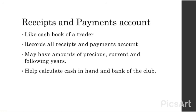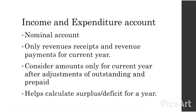The receipts and payments account is like the cash book of a trader. It records all the receipts and payments and may have amounts from the previous year, current year, and following years. It helps you calculate the cash in hand and bank balance of the club. The income and expenditure account is a nominal account — only the revenue receipts and revenue payments for the current year are recorded, after adjustments of outstanding and prepaid amounts are made.